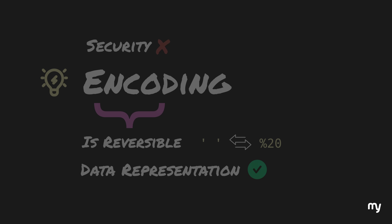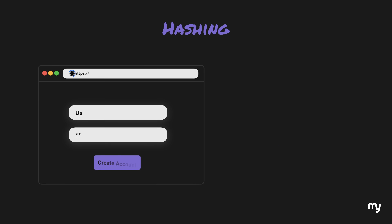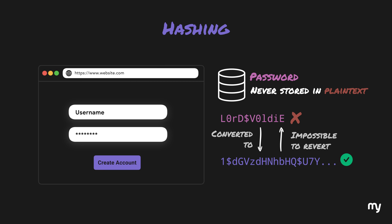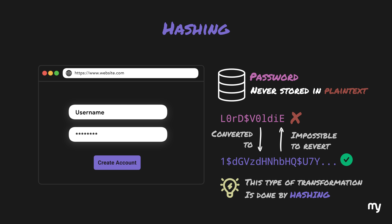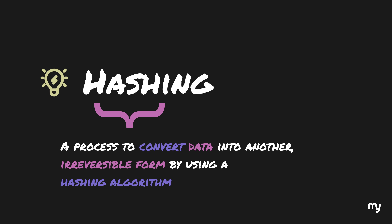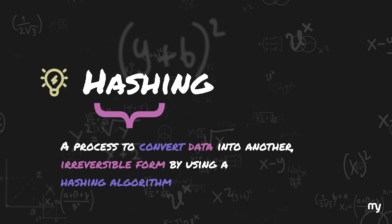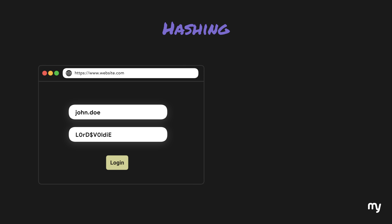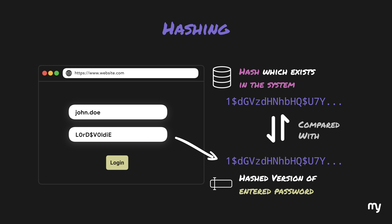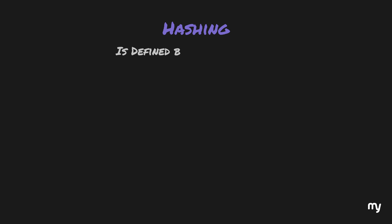And speaking of security, let's talk a bit about hashing. Whenever you create an account online, your password is never stored in plain text. Instead, it's converted into a fixed-length string of characters. From this string alone, it is impossible to construct the original password again. This type of transformation is possible by a process called hashing — where you convert data into another irreversible form by the use of a hashing algorithm, which does some complex math behind the scenes to achieve this.